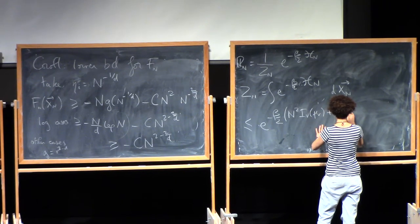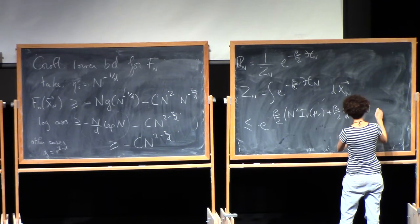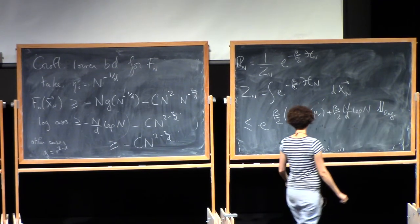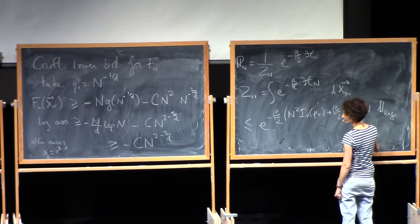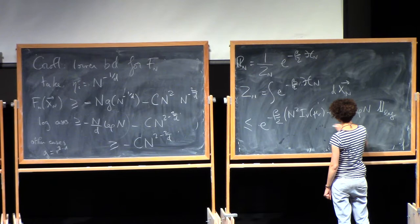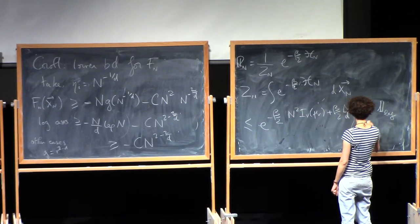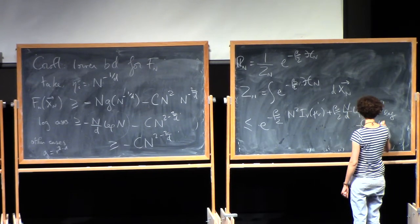Over 2 n over d log n if I'm in the logarithmic cases. So let me write this like this, one log. And then I add minus beta, so c beta n to the 2 minus 2 over d.